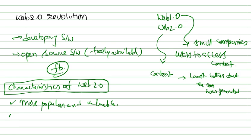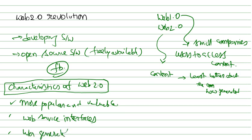Next, Web 2.0 can be mashed up more often via web service interfaces. It depends on user-generated as well as user-controlled data. For example, if you stop uploading videos on YouTube, the platform cannot get data. Daily, millions of videos are uploaded to YouTube on an hourly basis — the user generates the data and the user controls the data.